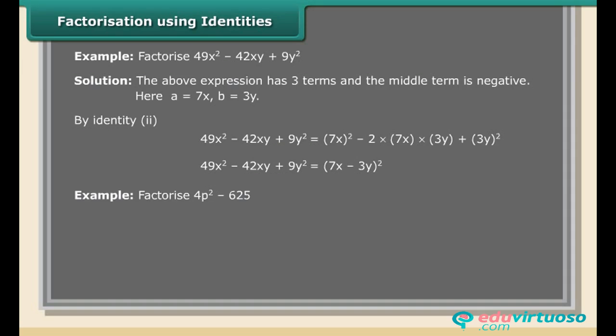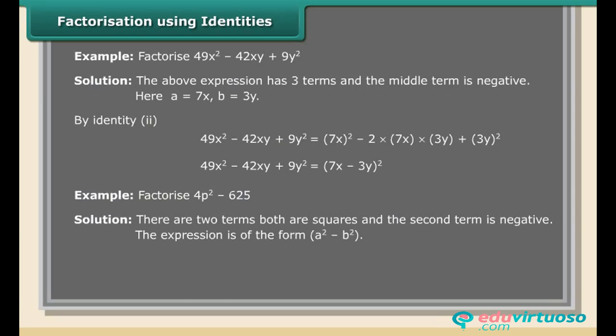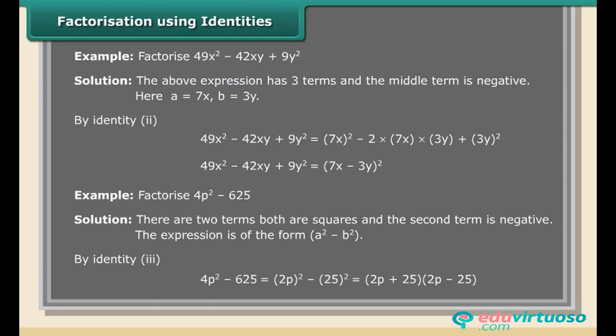Example: Factorize 4p² − 625. Solution: there are two terms, both are perfect squares, and the second term is negative. The expression is of the form a² − b². By identity 3: 4p² − 625 = (2p)² − 25² = (2p + 25)(2p − 25).